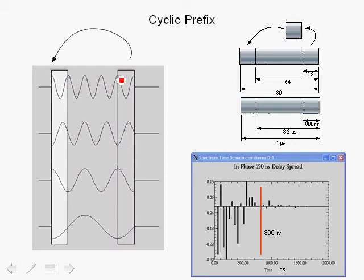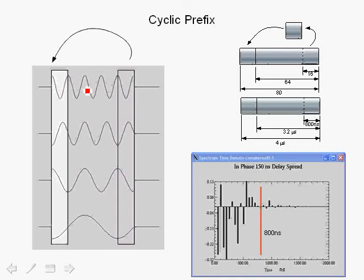As mentioned, if we took this symbol and copied it over and made it periodic, it will be continuous — and we're going to exploit that. If you take the last 16 samples of our OFDM symbol, which is the result of the inverse FFT of the carriers, and move them — copying them to the beginning — you form another symbol which is now 80 samples long: 64 samples plus 16 samples prefixed to the beginning.